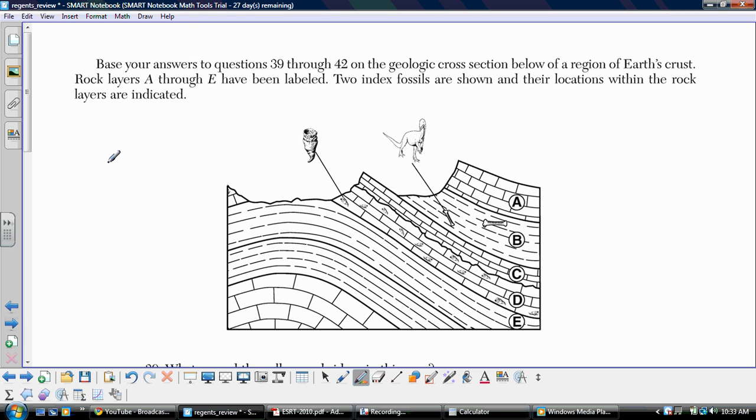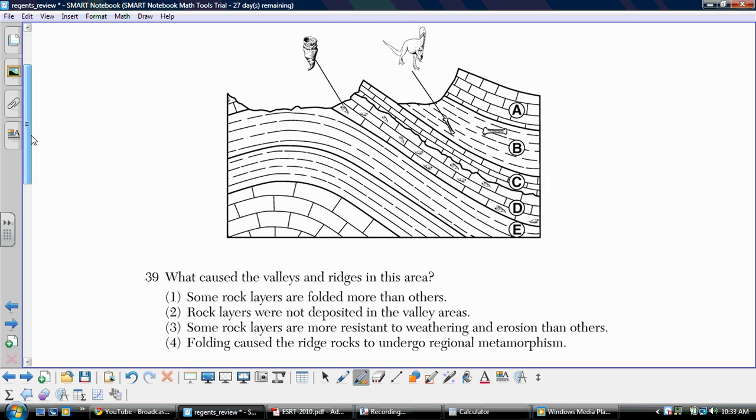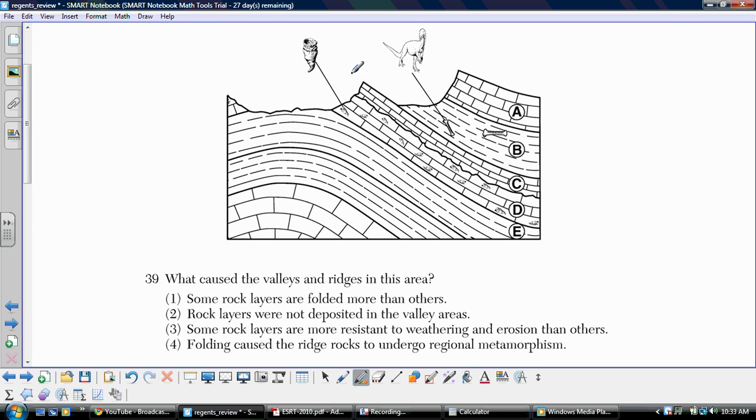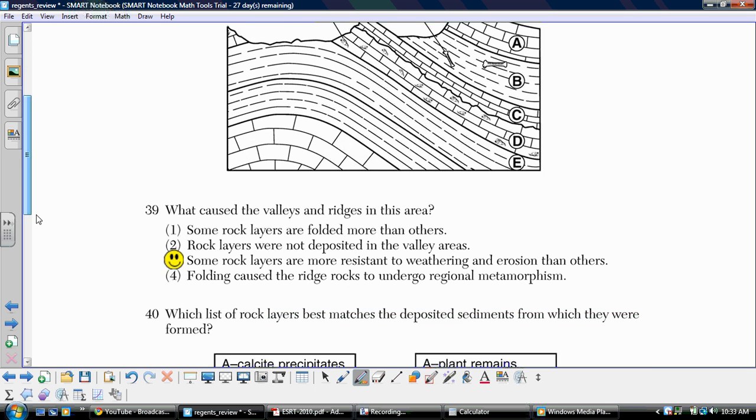We're going to base 39 through 42 on this geologic cross-section below a region of Earth's crust. We've got layers A through E here. They've been labeled. We've got two index fossils shown in the diagram as well. Number 39, what caused the valleys and ridges in the area? So we've got a couple ridges here, and we've got some valleys between the ridges. Now, essentially, as you can see, these areas were all once nice full-form strata, and now we've got something that's missing. The reason it is missing is that weathering and erosion took place and got rid of it. So when we look at our answer choices here, choice three, where it says some rock layers are more resistant to weathering and erosion than others. That's the only reason why these still remain. They've resisted the weathering and erosion, and so they're still there.